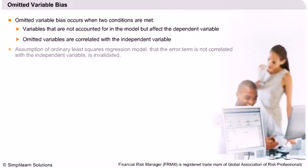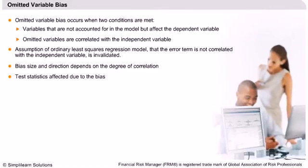Omitted variable bias: A variable may depend on more than one factor. For example, petrol prices might be a function of both crude prices and taxes. Such variables should be included in the model for accurate prediction. If omitted, they become part of the error term. Since we assumed the error term is not correlated with the independent variable, including a correlated omitted variable violates this assumption, as the error term will now bear some correlation with the independent variable.